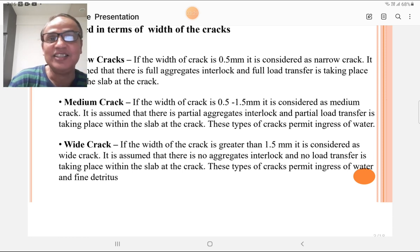The third category is wide cracks. If the width of the crack is greater than 1.5 mm, it is considered a wide crack. It is assumed that there is no aggregate interlock and no load transfer taking place within the slab at the crack. This type of crack permits ingress of water as well as fine detritus. When narrow cracks become medium cracks, we have to observe them very carefully and repair urgently. When it becomes a wide crack, it is very difficult to repair, but there are certain techniques to repair these cracks.